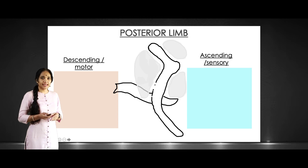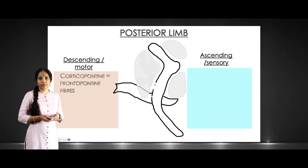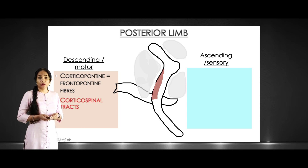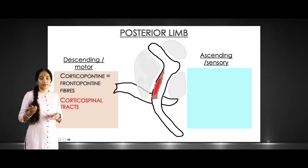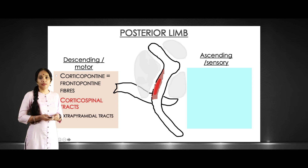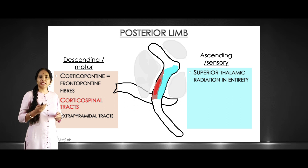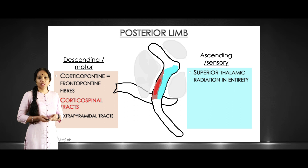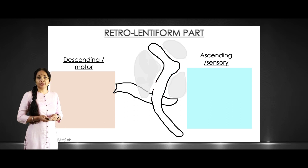Now let us see the descending fibers of the posterior limb. The corticopontine and frontopontine fibers are still there, as are the corticospinal tracts going to the body. The ascending pathway here is the major chunk of the superior thalamic radiation, so what starts in the genu continues into the posterior limb.